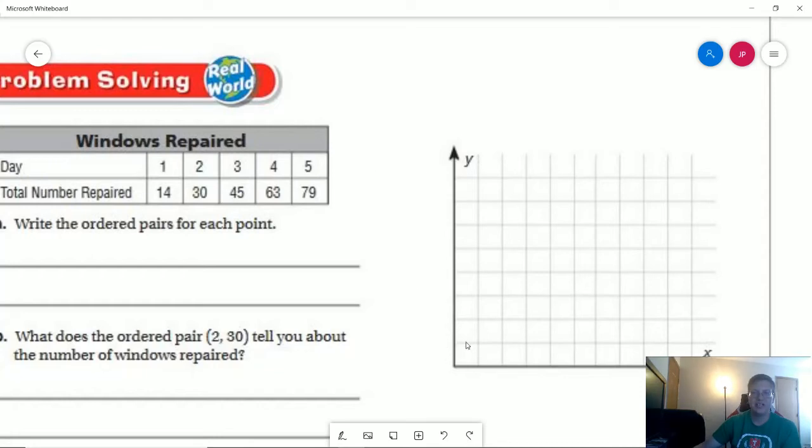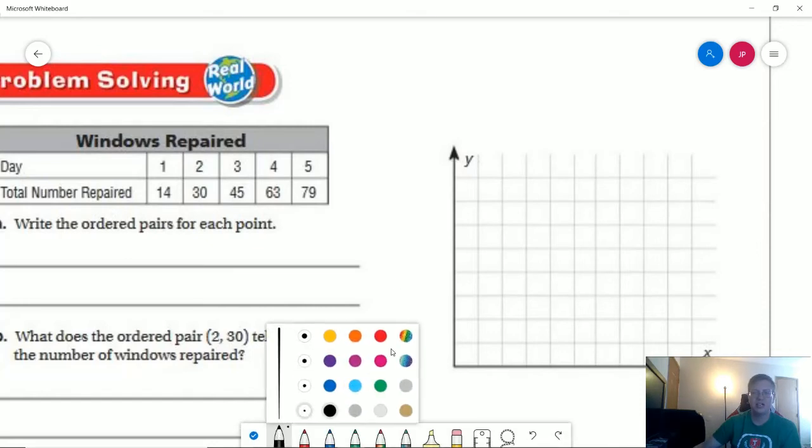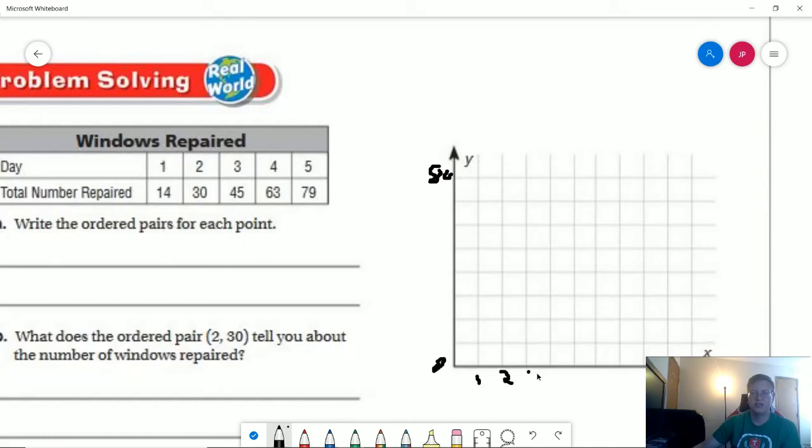What we are probably going to want to do is number count by tens along here. So we have to go all the way up to 79. So 10, 20, 30, 40, 50, 60, 70, 80 would be our grid for that. And then this would be zero. And then we can do our days. This would be day one, day two, day three, day four, day five.